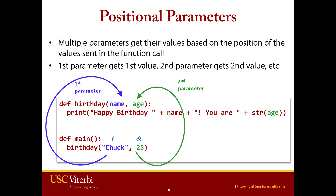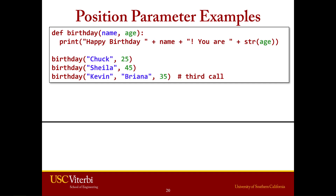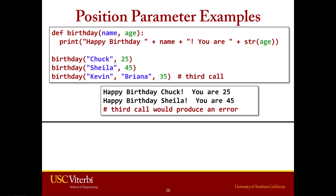Here we have the same function with three different calls: Chuck and 25, Sheila and 45, Kevin and Brianna and 35. The first call — Chuck, 25 — success, no problem. The second — Sheila, 45 — also no problem. The third call is going to generate an error because we have three arguments but we only have two parameters. So it's going to give us an error.